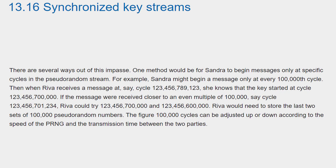One method would be for Sandra to begin messages only at specific cycles in the pseudorandom stream. For example, Sandra might begin a message only at every 100,000th cycle. Then when Reva receives a message at, say, cycle 123,456,789,123, she knows that the key started at cycle 123,456,700,000 — whichever even multiple of 100,000 is closest.